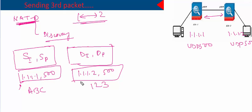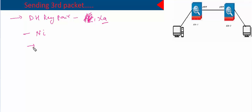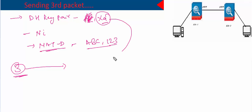So, before sending the third packet, the initiator calculates the Diffie-Hellman key pair — private key 'a' (kept private) and public key 'Xa'. It also calculates the initiator nonce, and it calculates the two NAT-D payloads, which in this case turn out to be 'abc' and '123'.